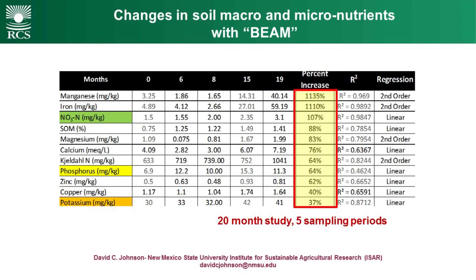One of the most important messages out of this work is what the biology is doing to the chemistry. The old paradigm was that biology hardly existed and we can do everything with chemistry and physics. What we now know is that biology does the whole lot — biology can fix physics and it will fix chemistry. Those numbers show magnesium increased by 1,100% in availability in 20 months, with just one dose of Johnson-Su compost. Iron increased 1,100%. Nitrogen increased 100%. These are massive increases in the availability of nutrients, all provided and released by the soil biology.